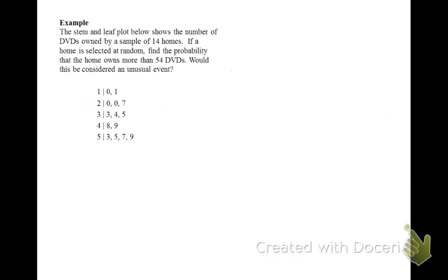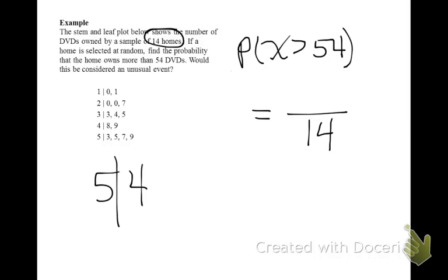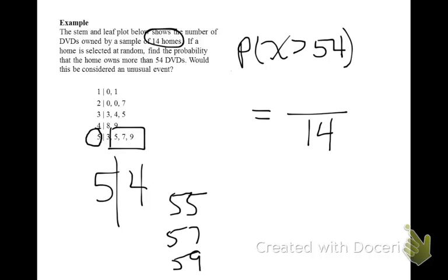The stem and leaf plot below shows the number of DVDs owned by a sample of 14 homes. If a home is selected at random, find the probability that the home owns more than 54 DVDs. We'll need to find the number of homes with more than 54 DVDs and then divide by the total of 14 homes. On the stem and leaf plot, a stem of 5 with leaf greater than 4 gives us 55, 57, and 59 — there are 3 homes with more than 54 DVD players. So the probability is 3 out of 14.